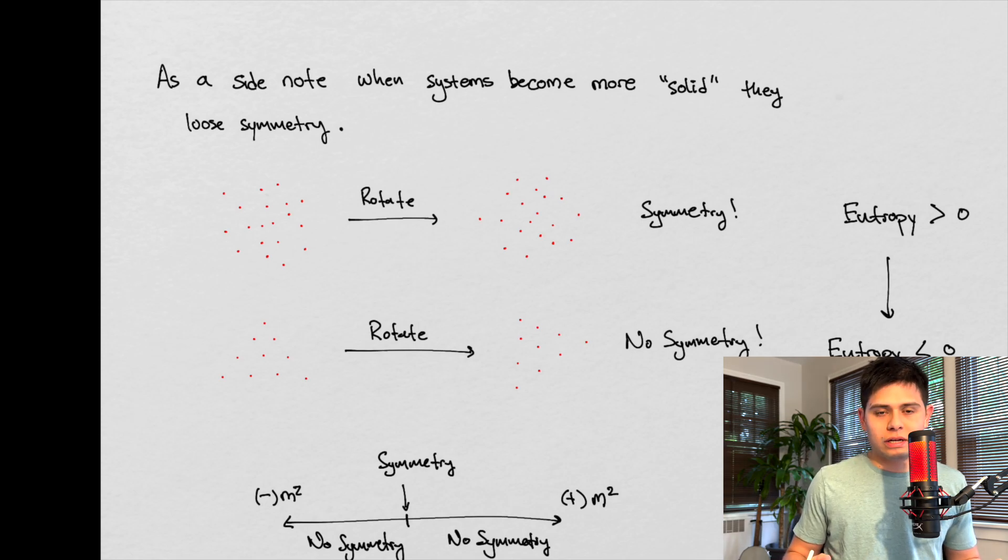however, if things cool down, hopefully you didn't hear the dogs, if things cool down, then we get a lattice structure. Right? So we go from a gas to some lattice structure. We're cooling things down.